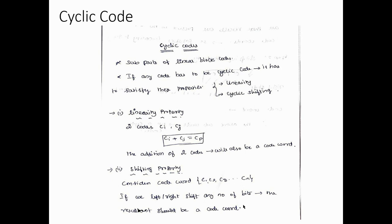The second property is the shifting property. If you consider the code word C1, C2, C3 up to Cn, and you left shift or right shift any number of bits, the resultant should also be a code word. For example, you can shift C1 to the right hand side by one bit or two bits. Even after shifting, the result should also be a code word. That is the shifting property.